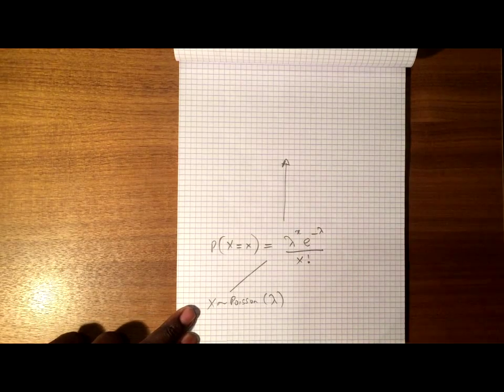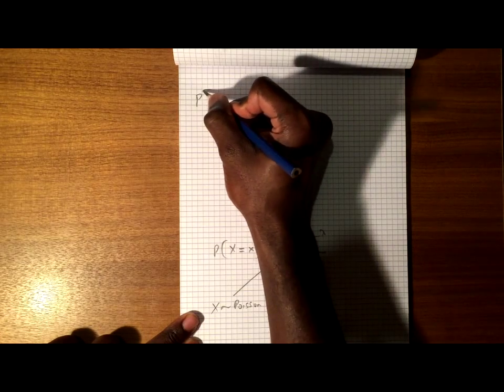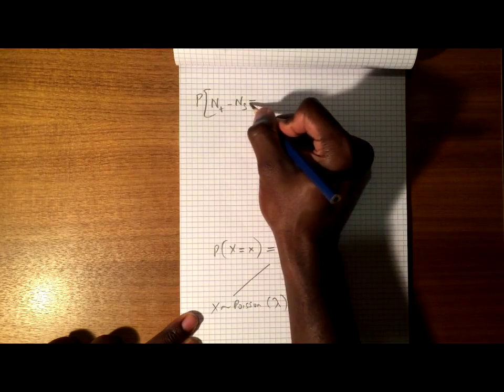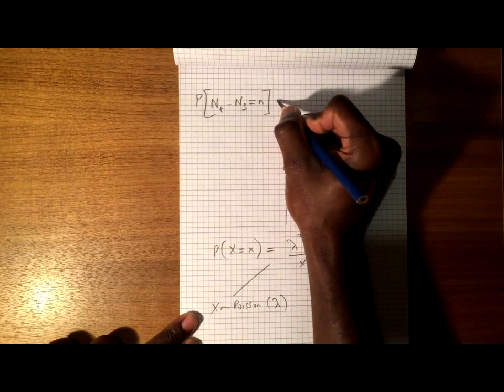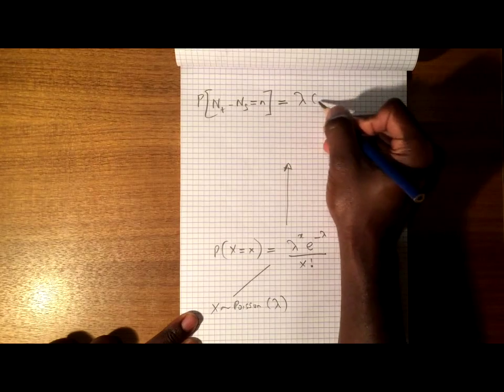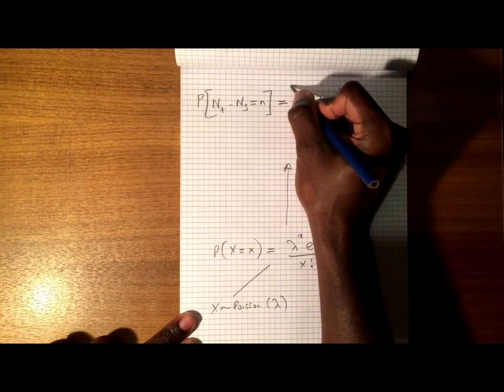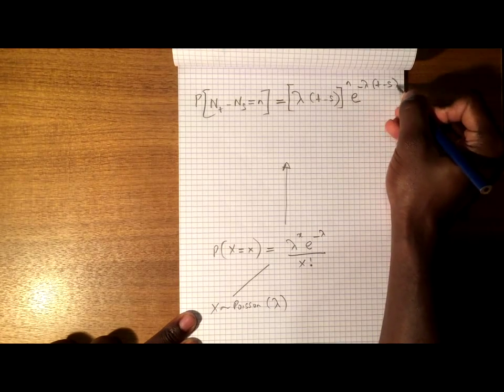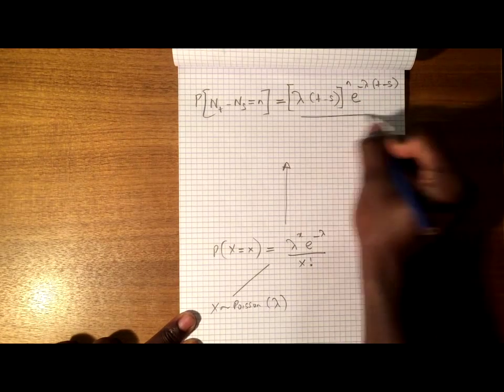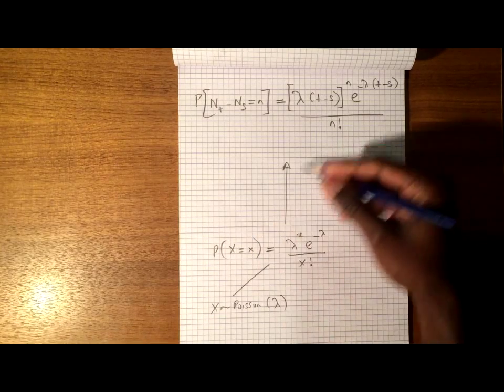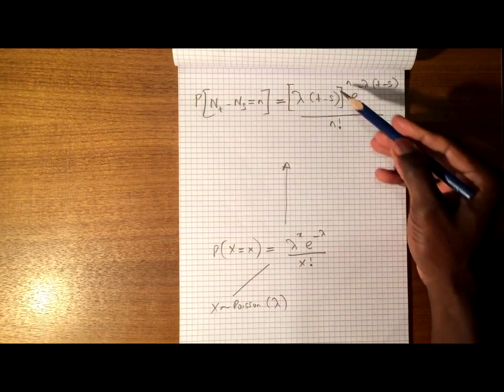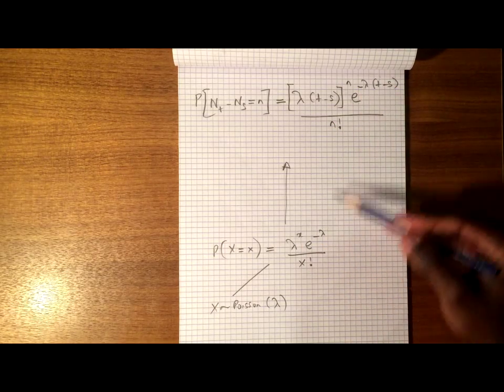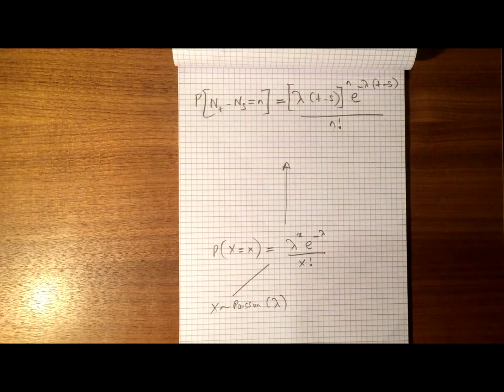Similarly, for a Poisson process, we can have the probability that nt minus ns, that increment, takes a value little n to be equal to lambda times t minus s all to the n e to the minus lambda t minus s over n factorial. So as you can see, there's a direct relationship there, where this is our lambda to the n e to the minus lambda times a time interval over n factorial.